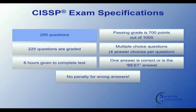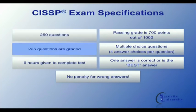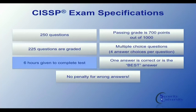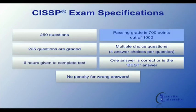The CISSP exam itself is made up of 250 questions. 225 of those are actually graded. You get six hours to take the test. A passing grade is 700 points out of a possible 1,000.